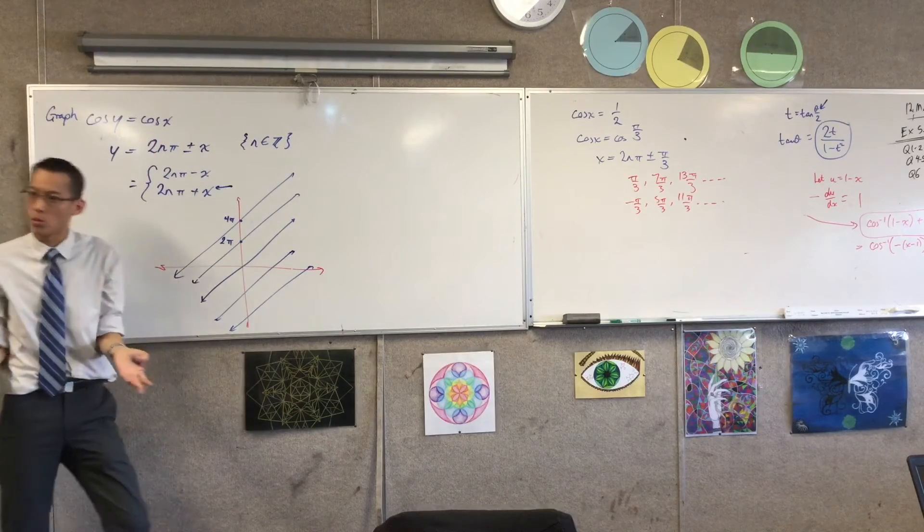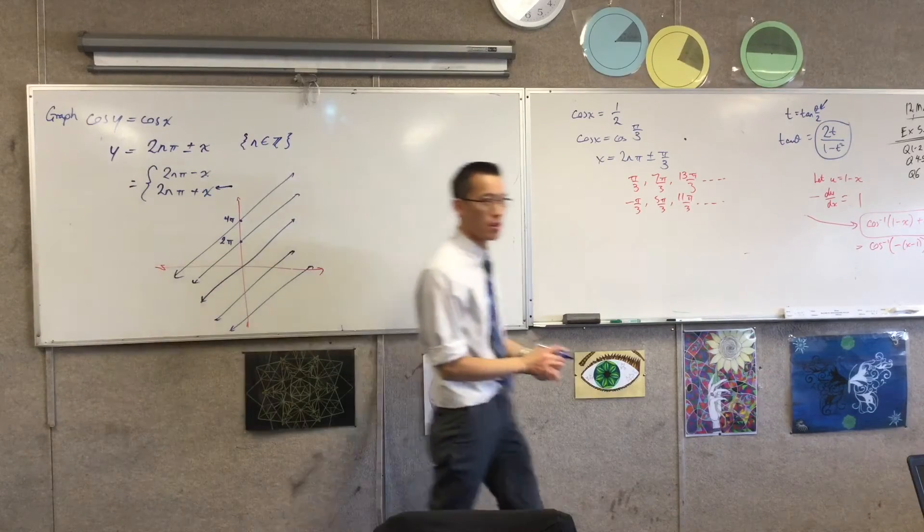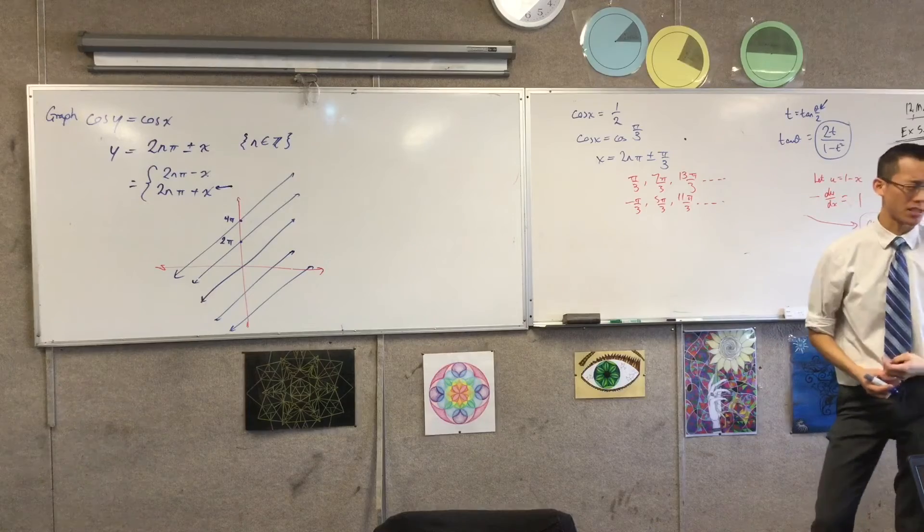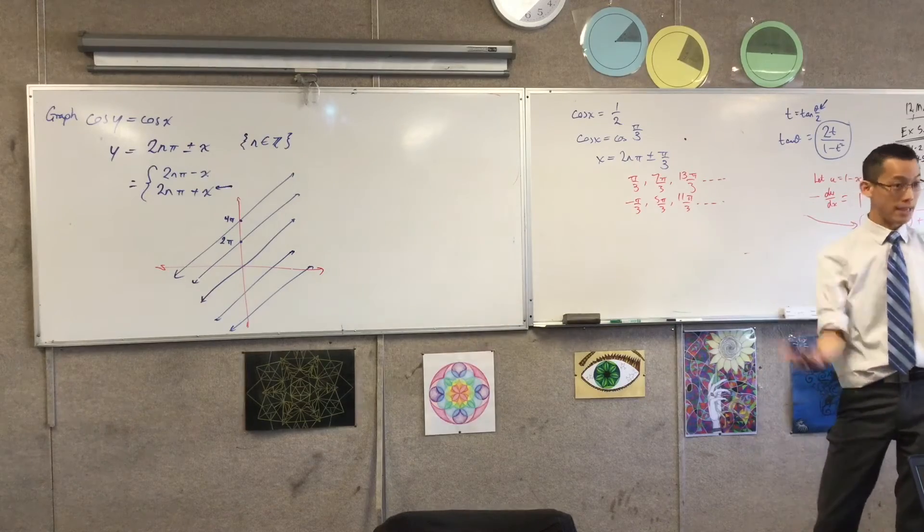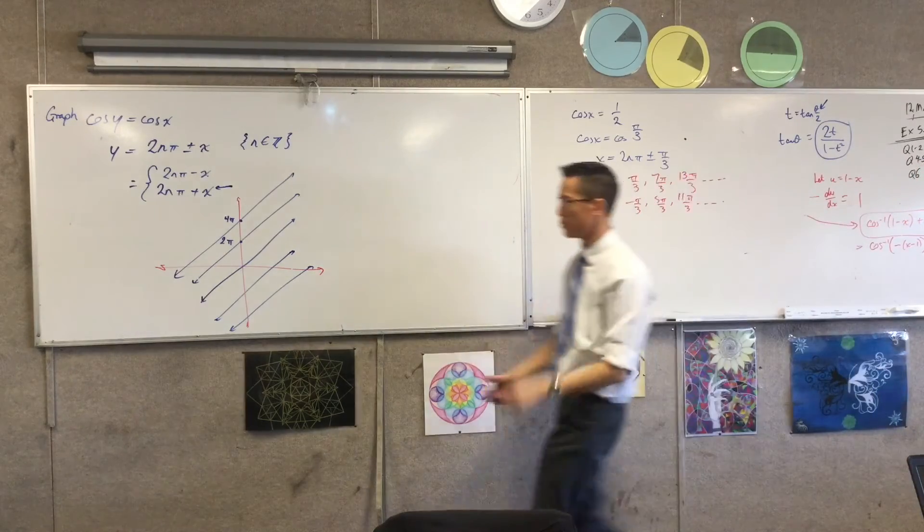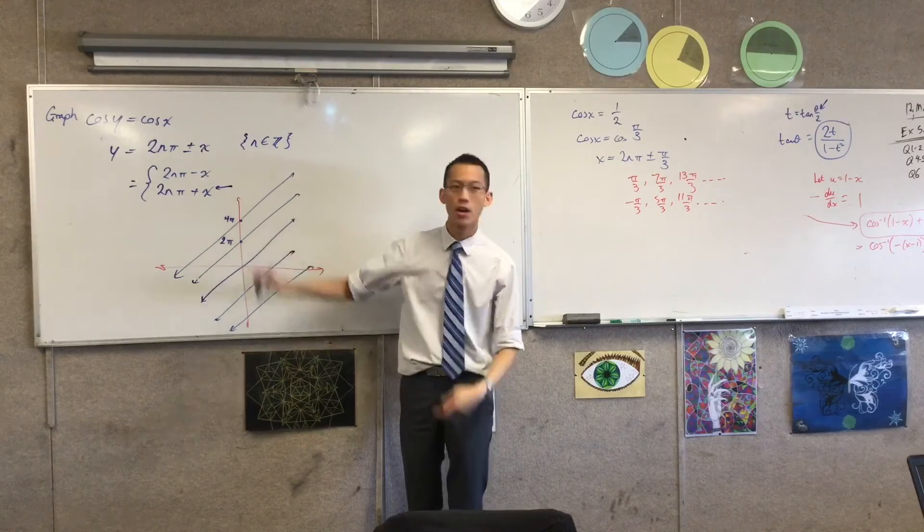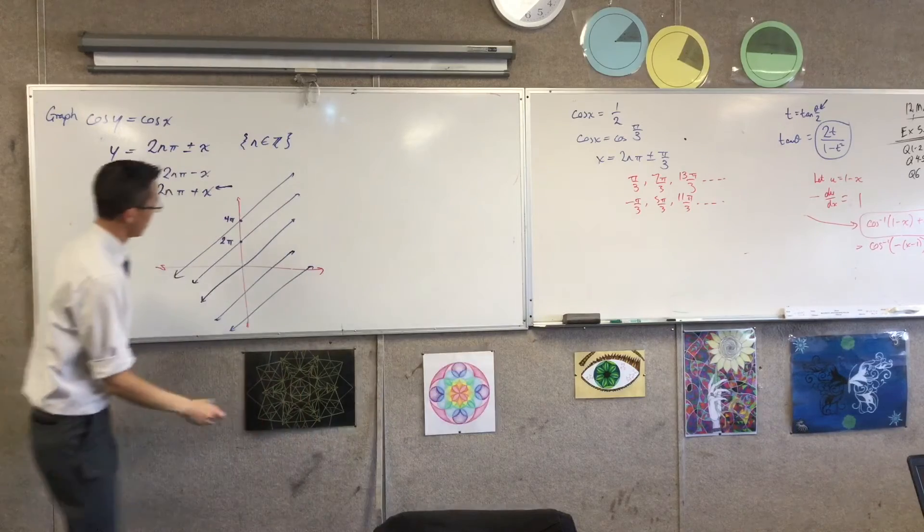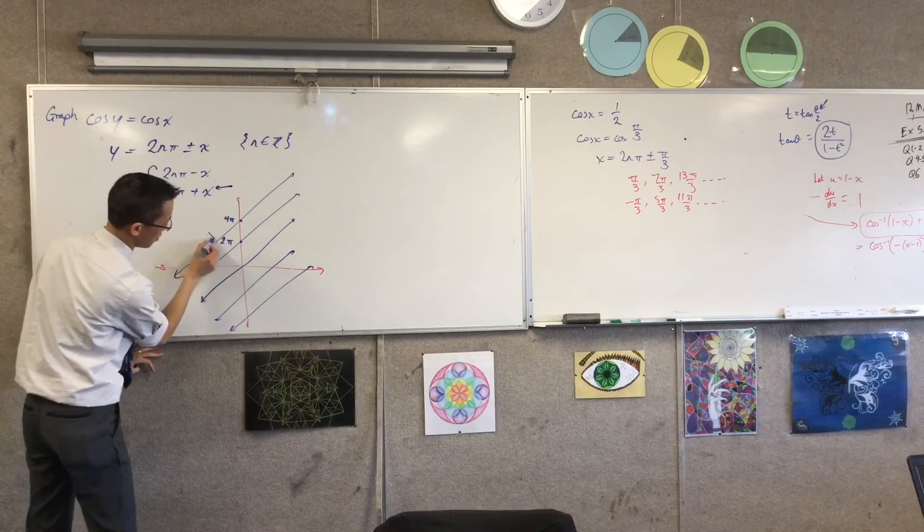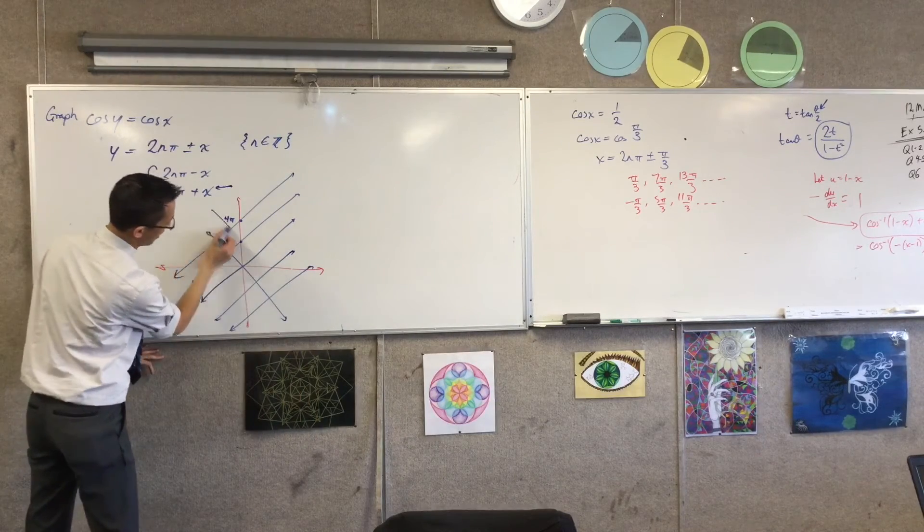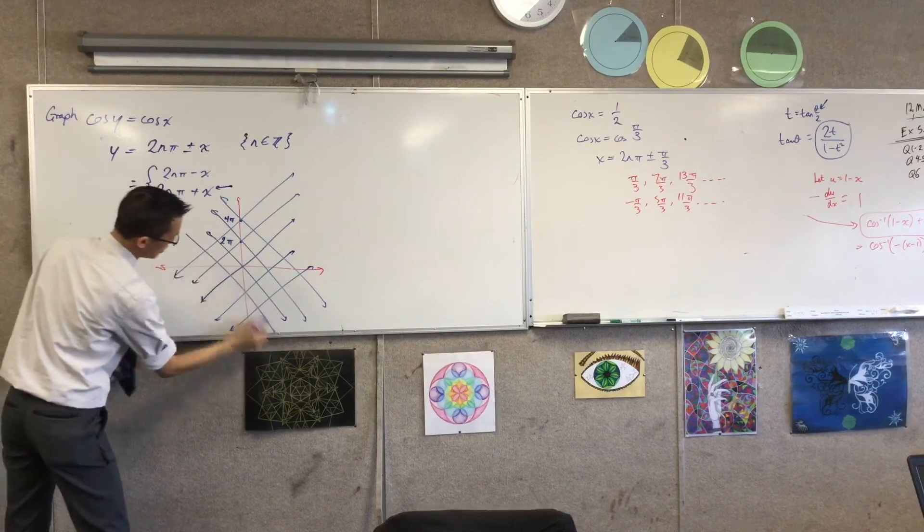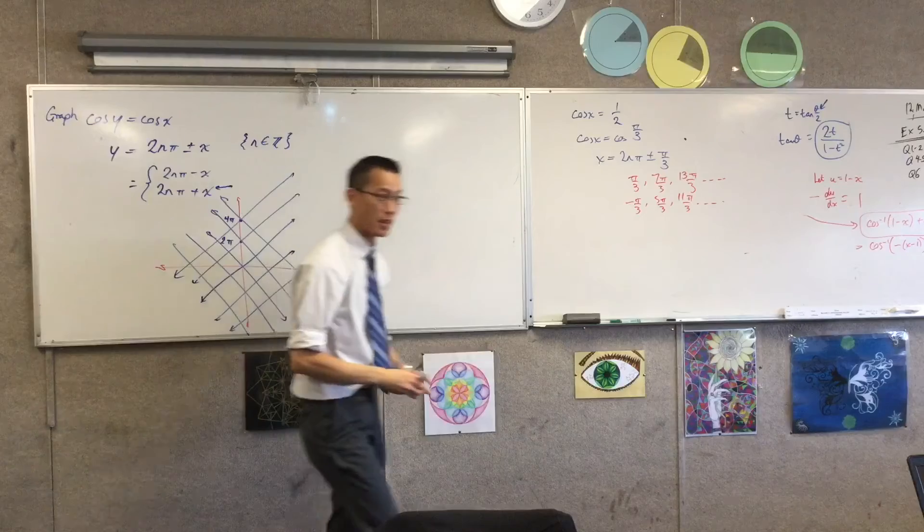Now I do the negative ones. What's the difference? It's just the gradient, right? Just thinking about y equals mx plus b form, all the y-intercepts, the b's, are the same, still getting 0, 2π, 4π. All that's different is that I'm going down at a gradient of negative one. So I'm going to get these guys. That one, and that one, and that one, and all the rest of their friends.